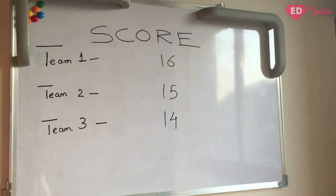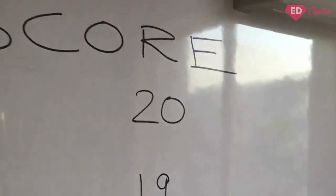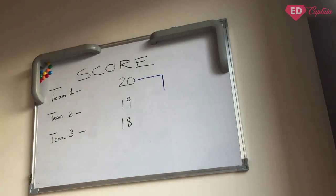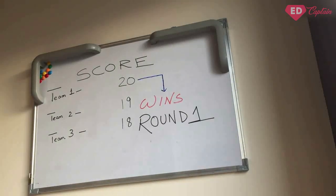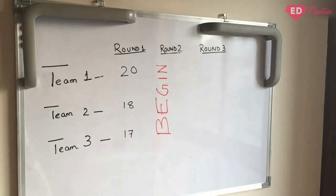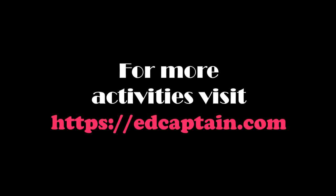Continue playing the game for the same theme as long as a player reaches a highest score of 20 points. Once a player reaches 20 points, that player wins round 1. The winning player from round 1 then chooses the next theme sheet for round 2.